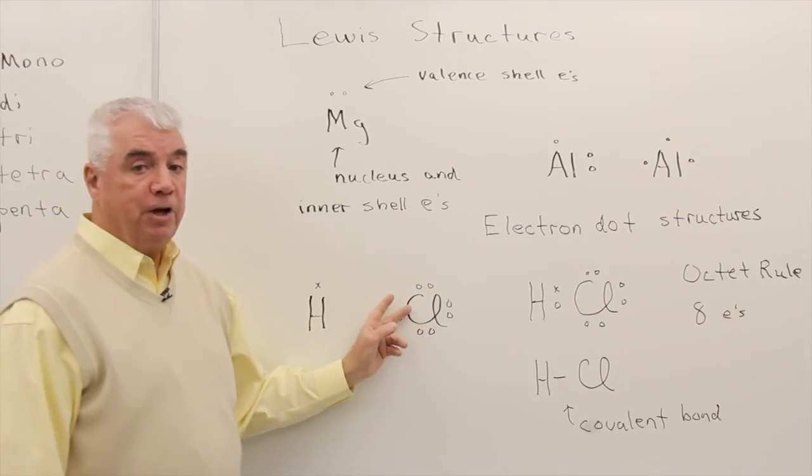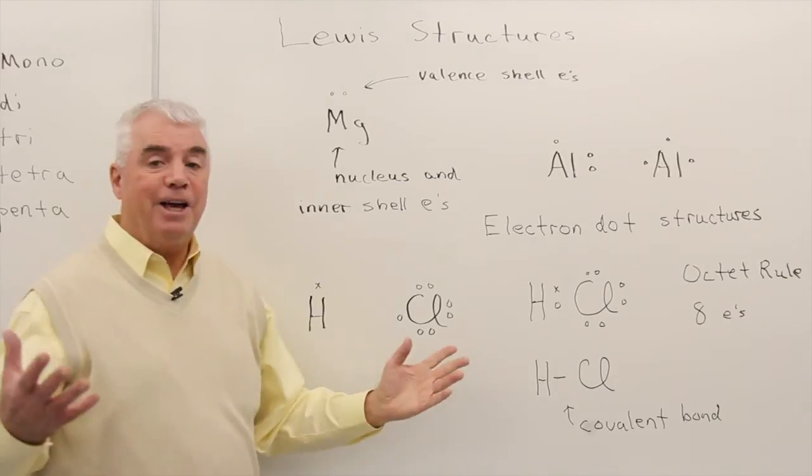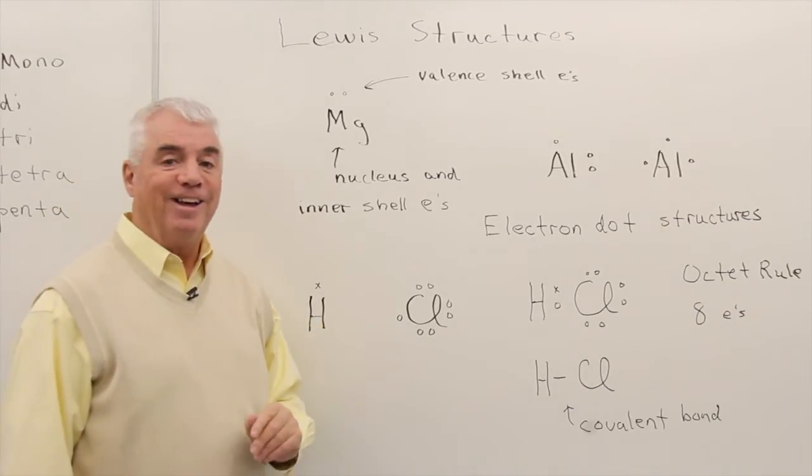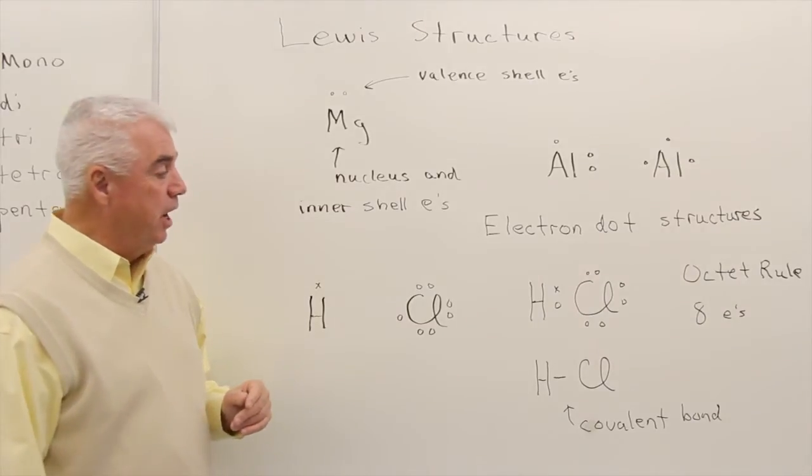Chlorine, in group 7a, seven valence electrons. And the octet rule still applies. Even though they can't transfer electrons, they're going to work out a sharing that obeys the octet rule.